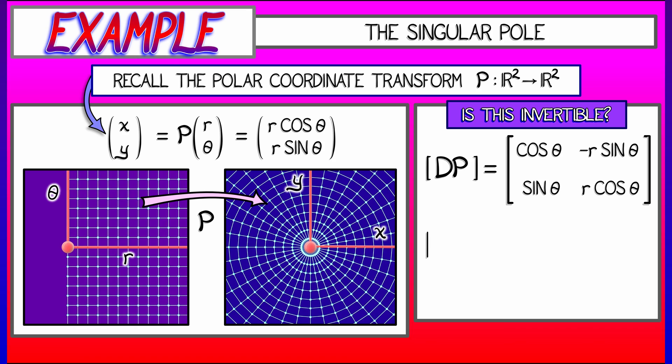Invertibility is controlled by the determinant of this derivative. That's r cosine squared plus r sine squared, which simplifies to r.